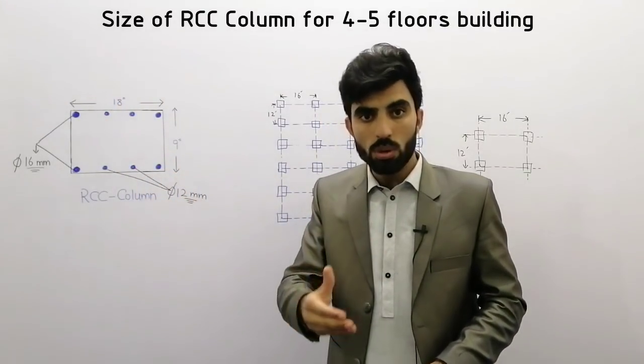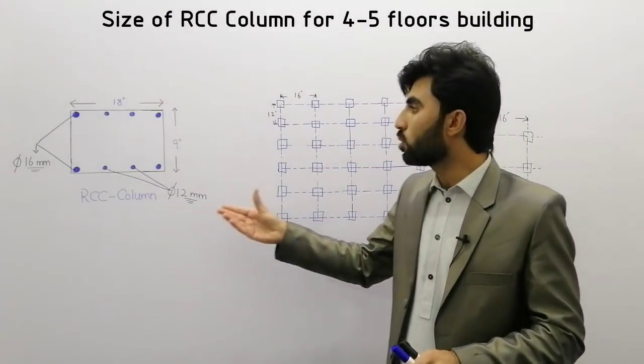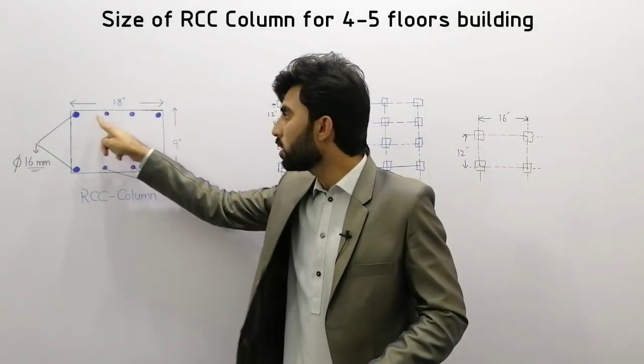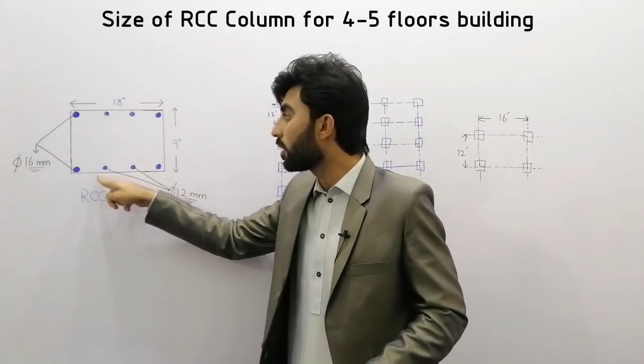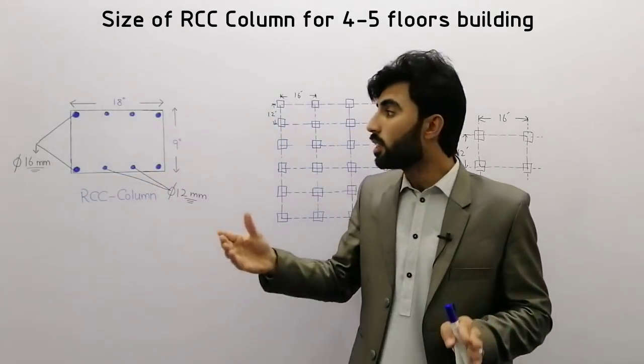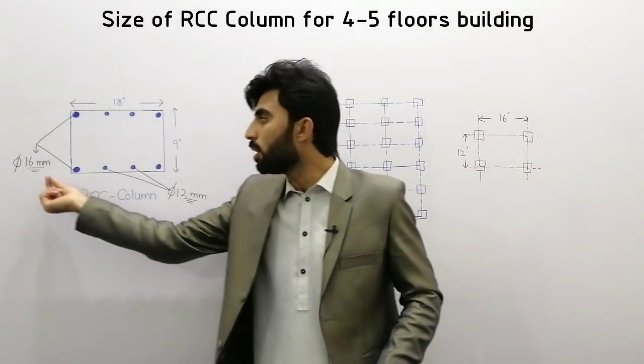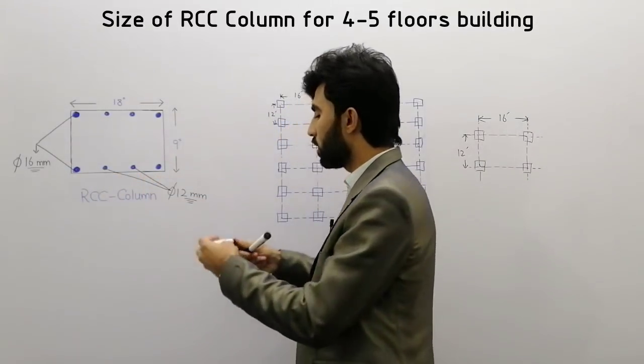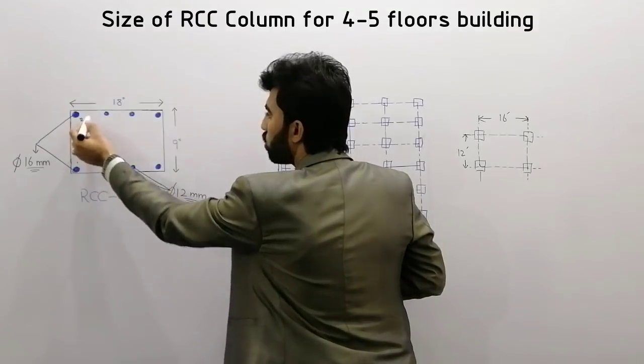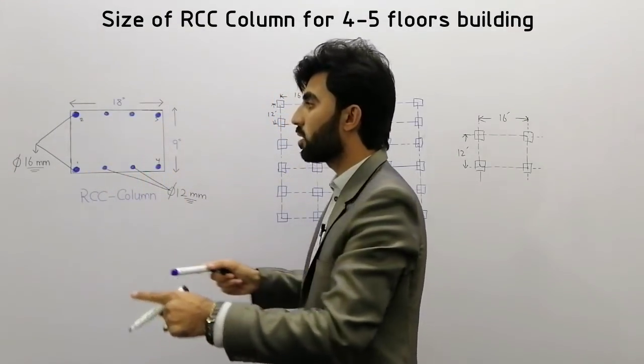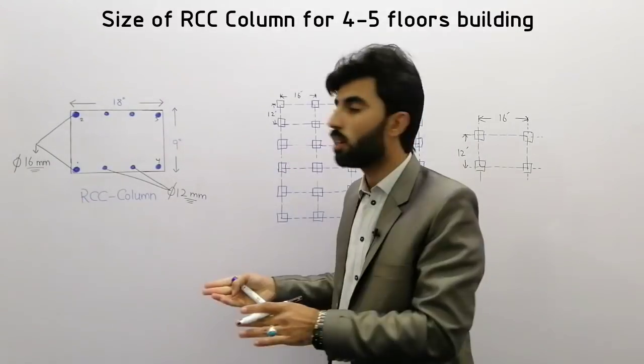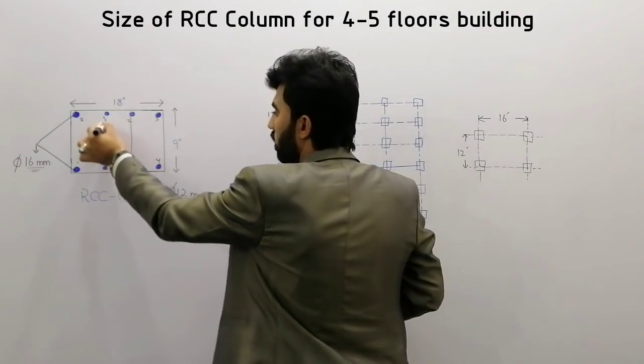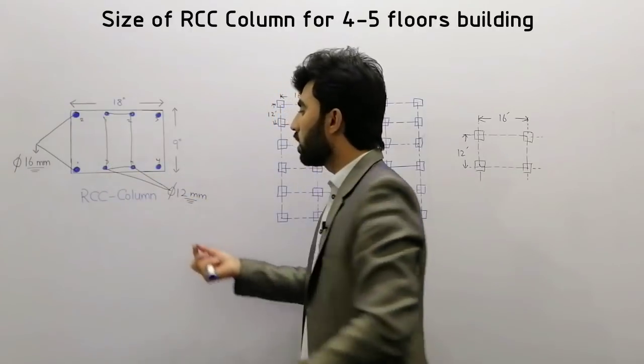Now come to reinforcement details. We have total 8 numbers of steel bars here. Remember that there are 4 numbers of steel bars 16 millimeter which are at the corner of this column, and 4 other bars - these are 12 millimeter.